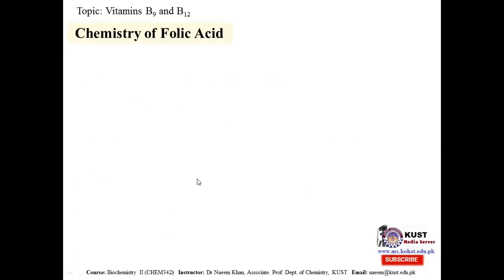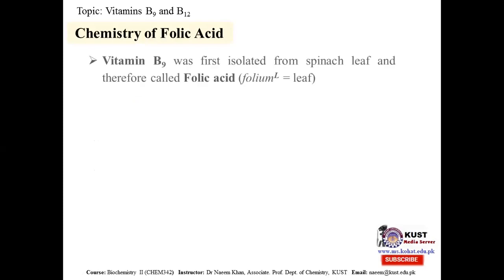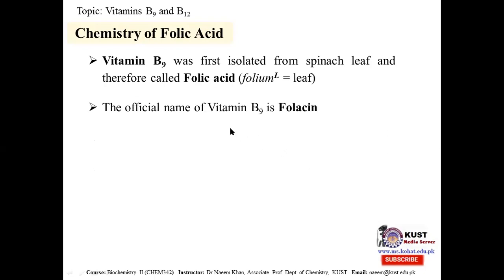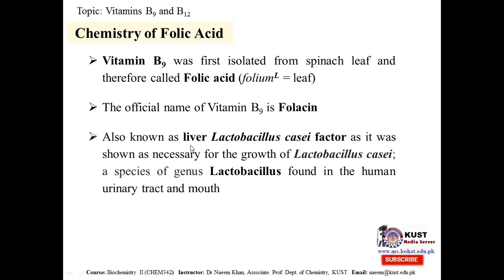Starting from the chemistry of folic acid, Vitamin B9 was first isolated from the spinach leaf, and therefore it is known as folic acid. The word 'folic' comes from 'folium,' which is Latin for leaf. The official name of B9 is folic acid, also known as the liver Lactobacillus casei factor, because it was shown to be necessary for the growth of Lactobacillus casei.